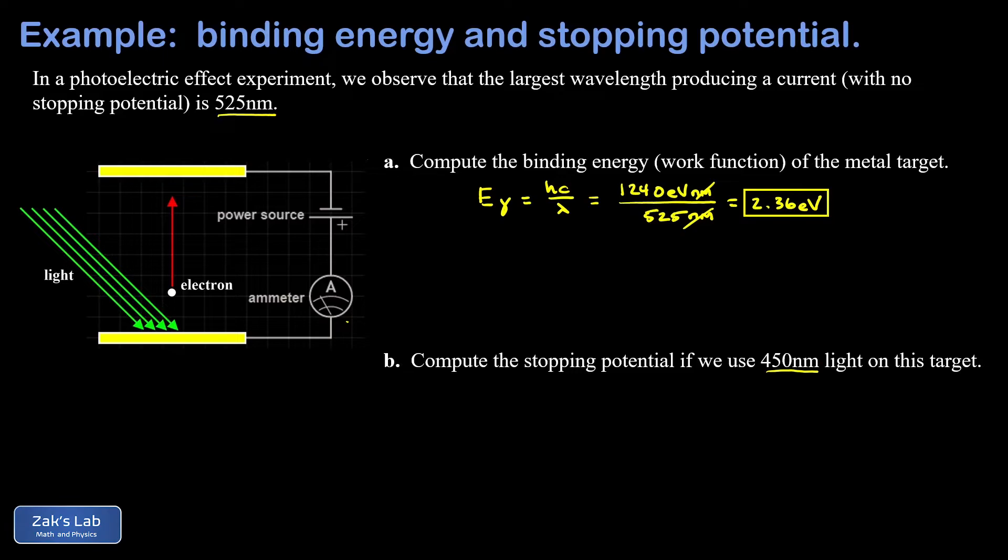Electrons bumped off by this light are going to carry some kinetic energy with them. What we do is turn the dial on the power source until we just barely stop any of those electrons from making it to the other side. That's the cut point where we'll register a current of zero in the apparatus.